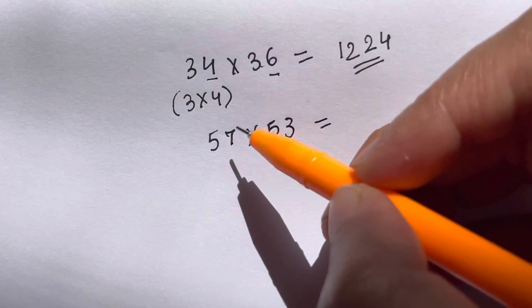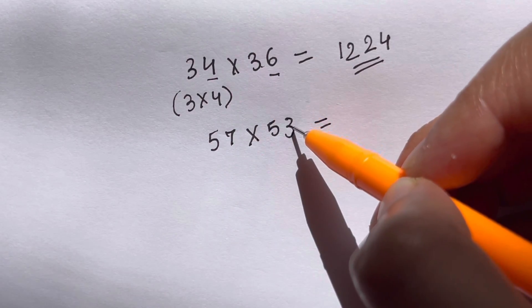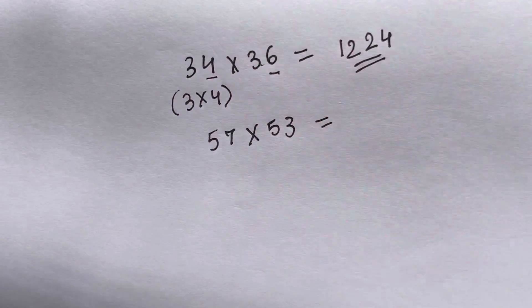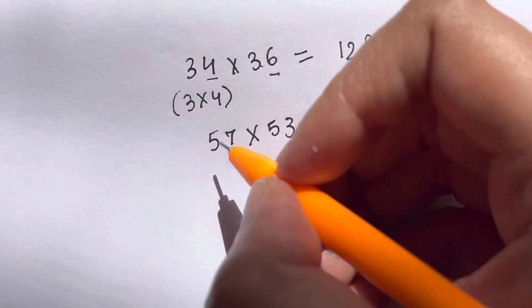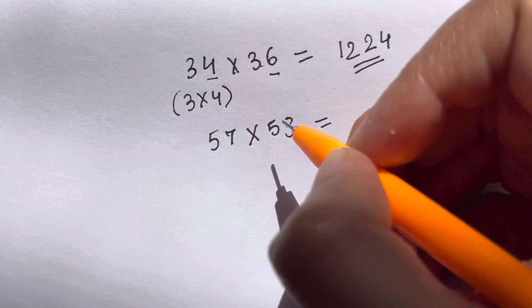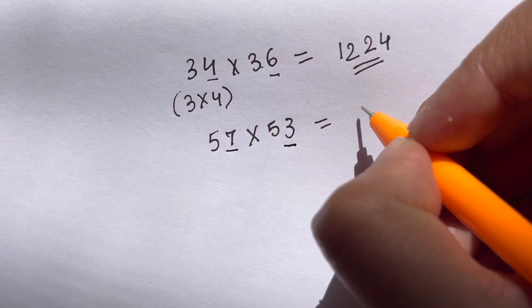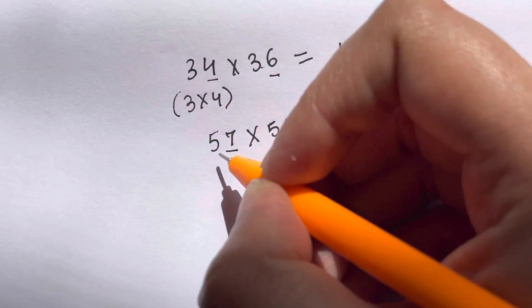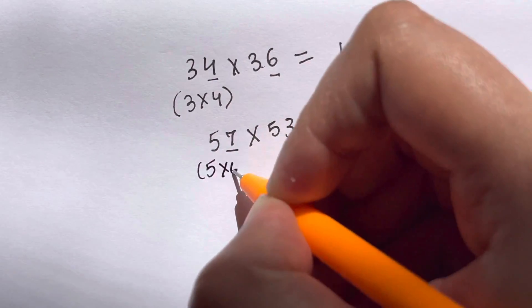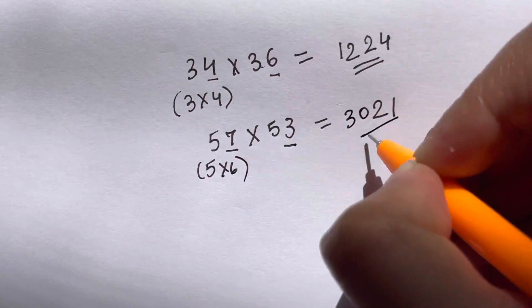Let me give you another example: 57 times 53. You just have to identify that the ending digit adds up to 10 and the starting digit is same. 7 plus 3 is 10, so you can apply the same logic. 7 times 3 is 21, and the next number after 5 is 6, so 5 times 6 is 30. Your answer is 3021. So quick!